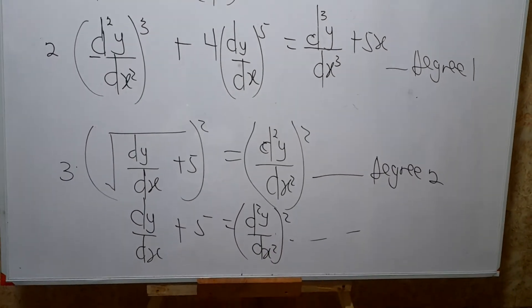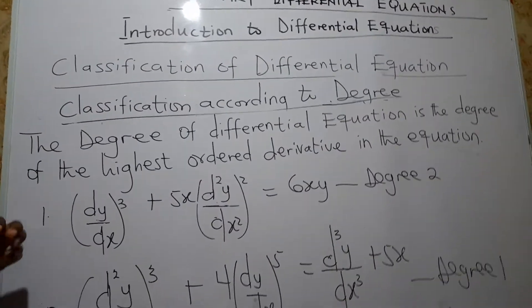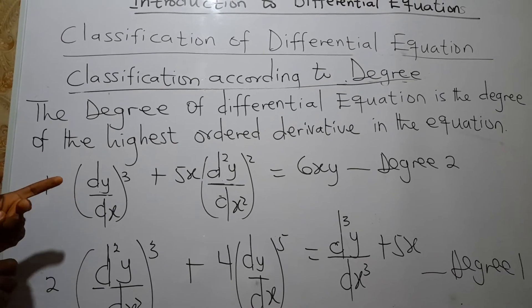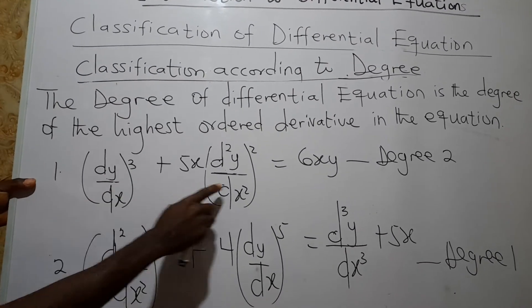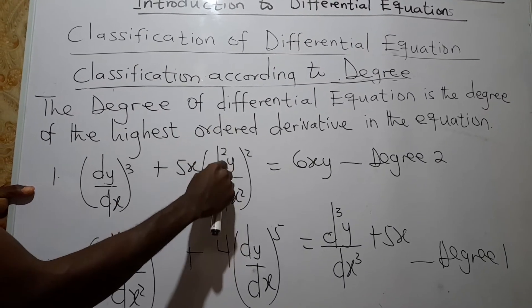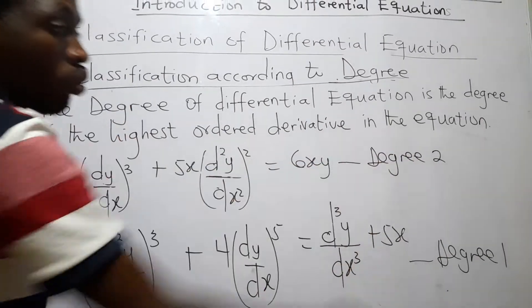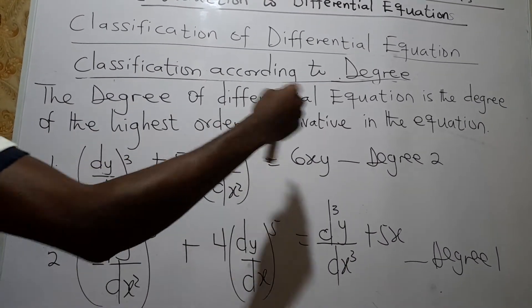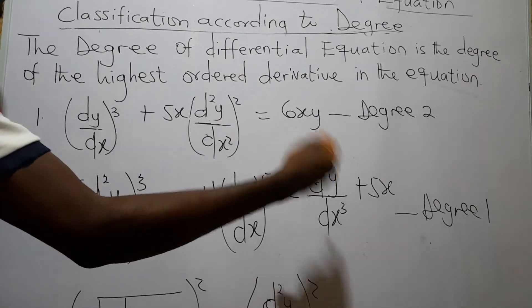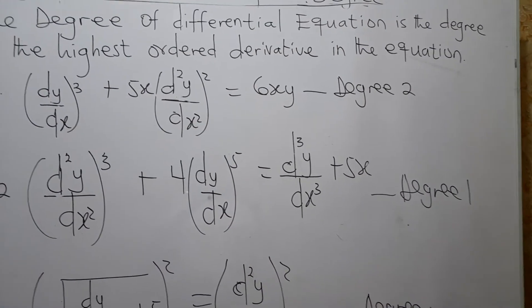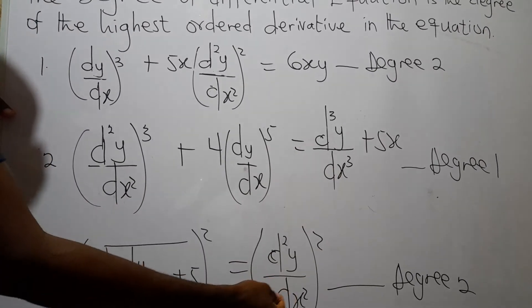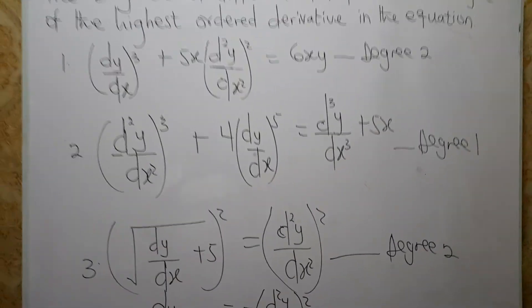All these differential equations are ordinary differential equations. To classify them fully: the first has order 2 (highest order is 2), so it is a second-order ordinary differential equation with degree 2. The second has highest order 3, making it a third-order ordinary differential equation with degree 1. The last has highest order 2, so it is a second-order ordinary differential equation with degree 2. I hope you get the classification according to degree.